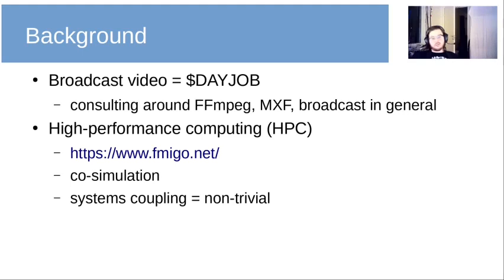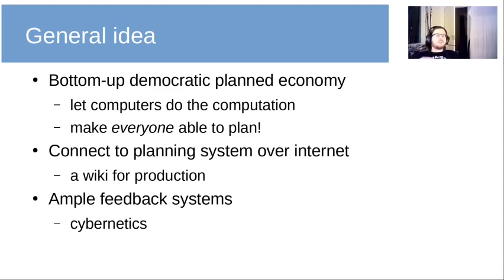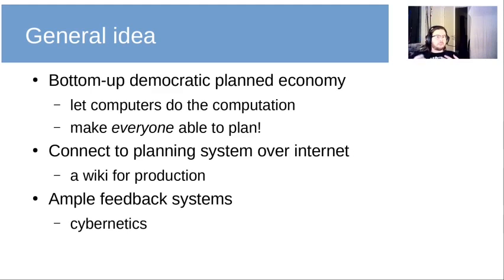The general idea of all this is a bottom-up democratic planned economy where we let computers do the necessary computation, and where we make everyone able to plan — able to get their hands on the planning system. We can do this by making it accessible over the Internet. The way I've been explaining this lately is that the notion is roughly a wiki for production. We also want to have a lot of feedback systems in place, so if something is wrong, we want the system to know about it. This is where the notion of cybernetics comes in, which I will talk about later.